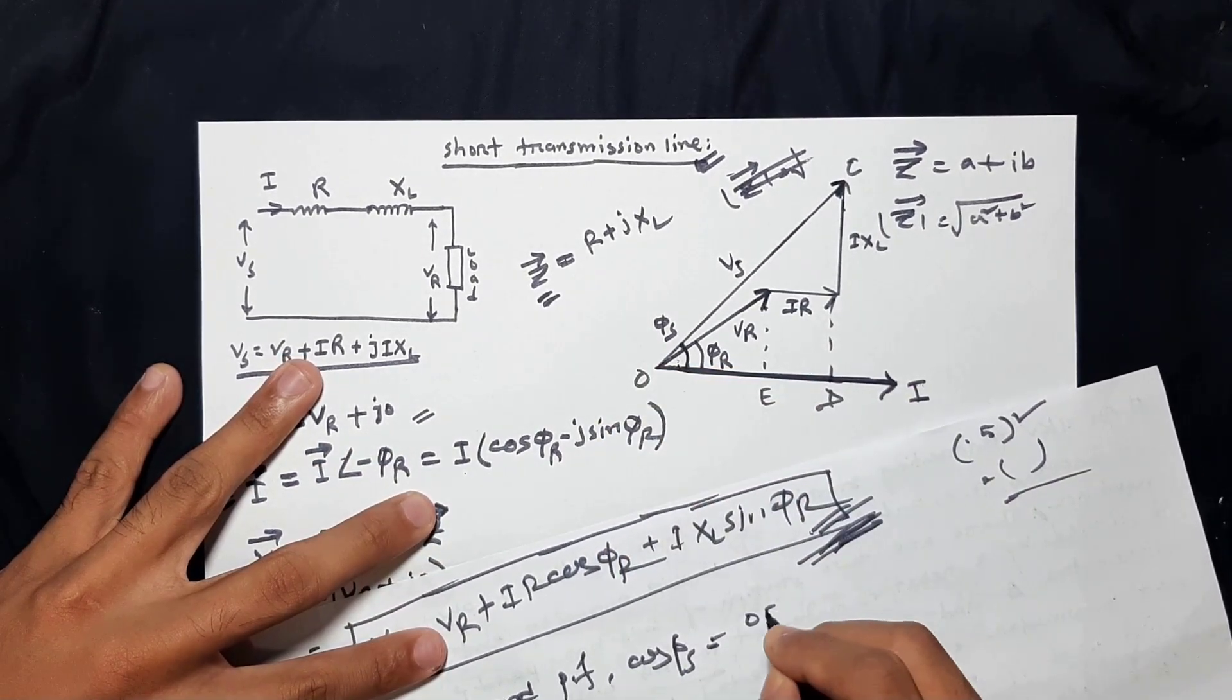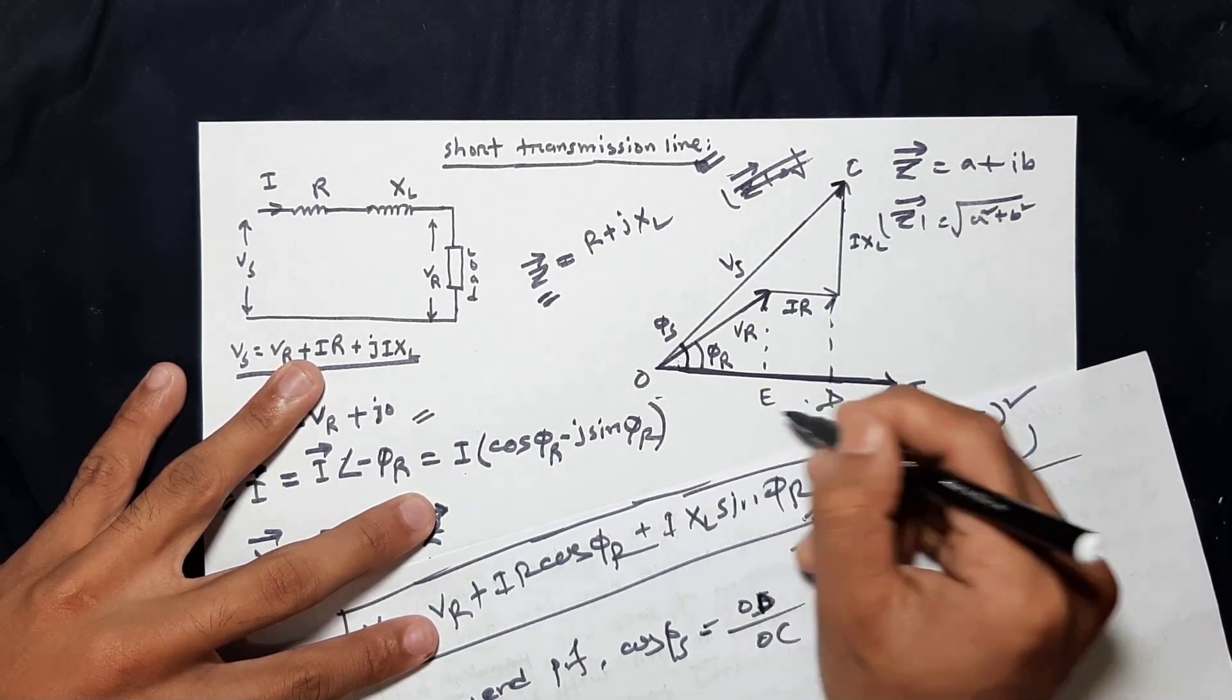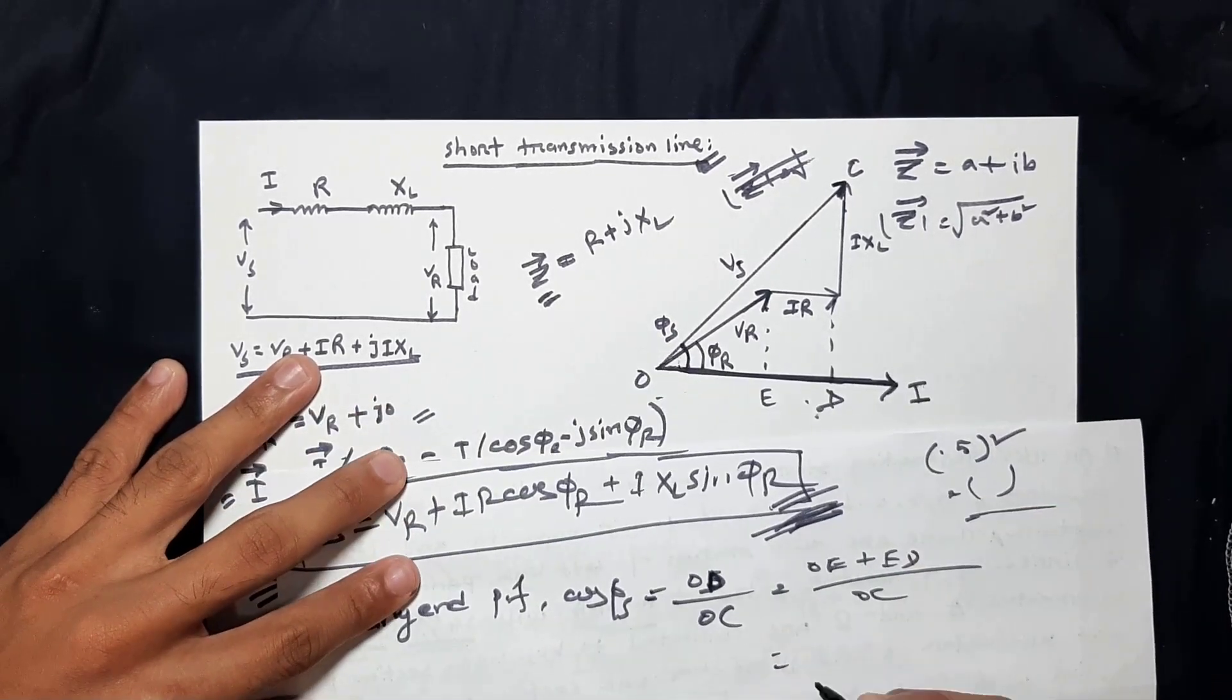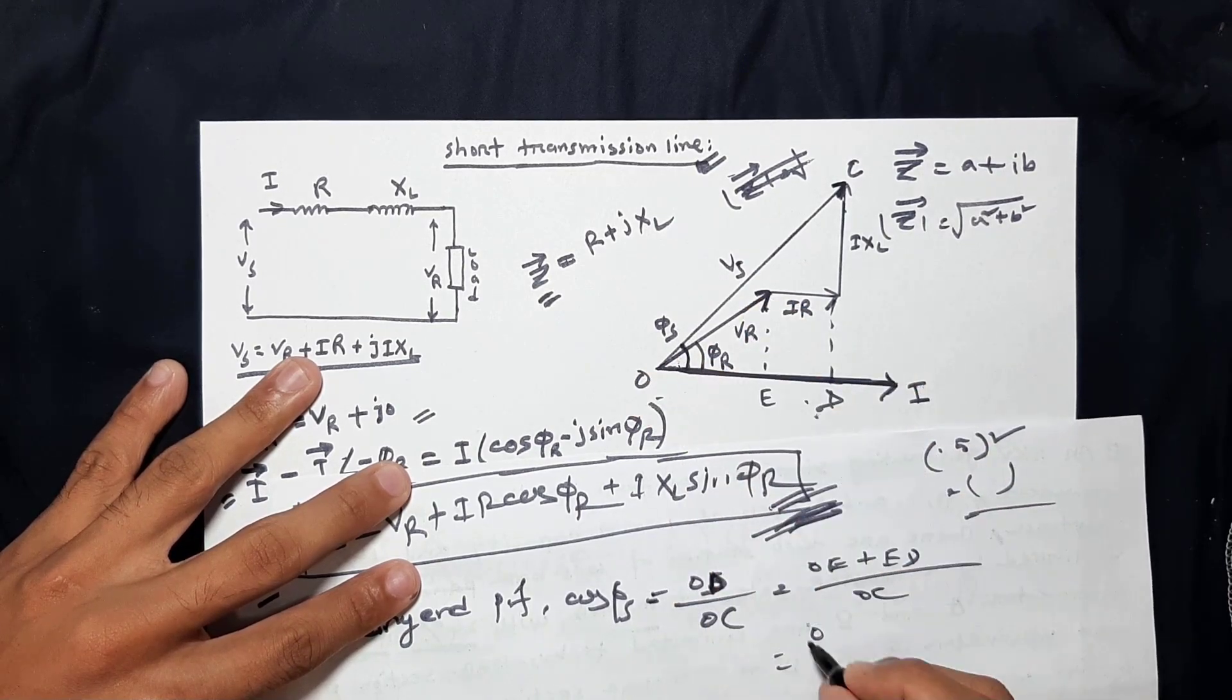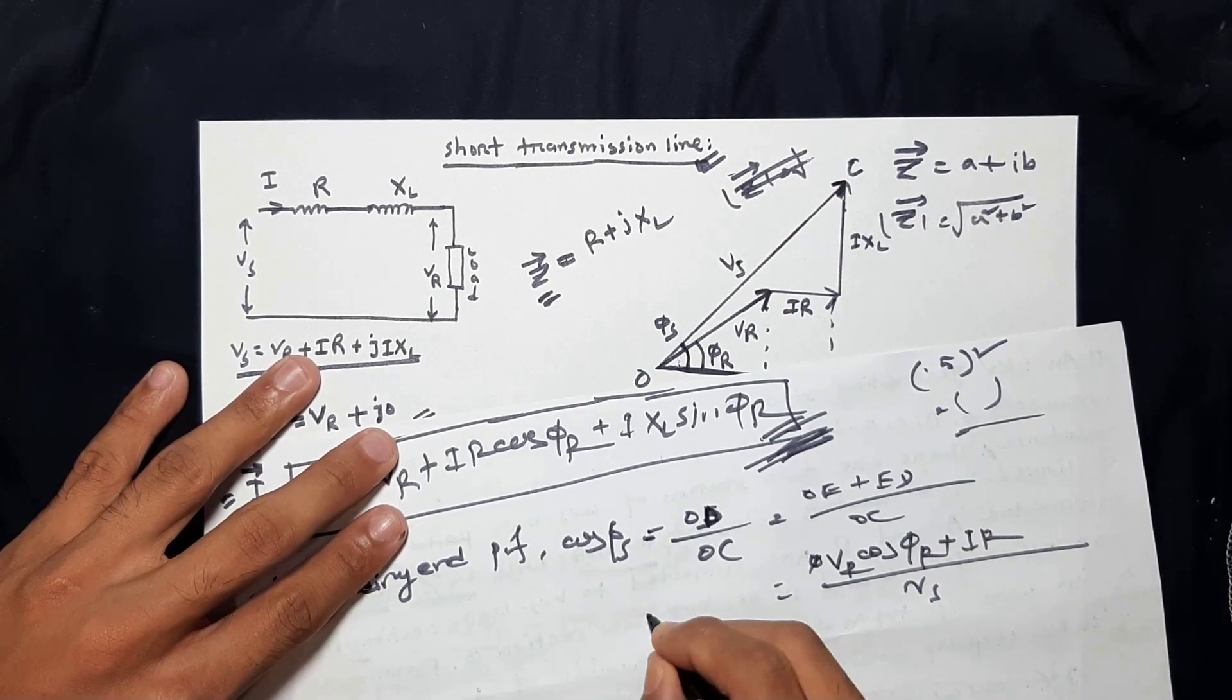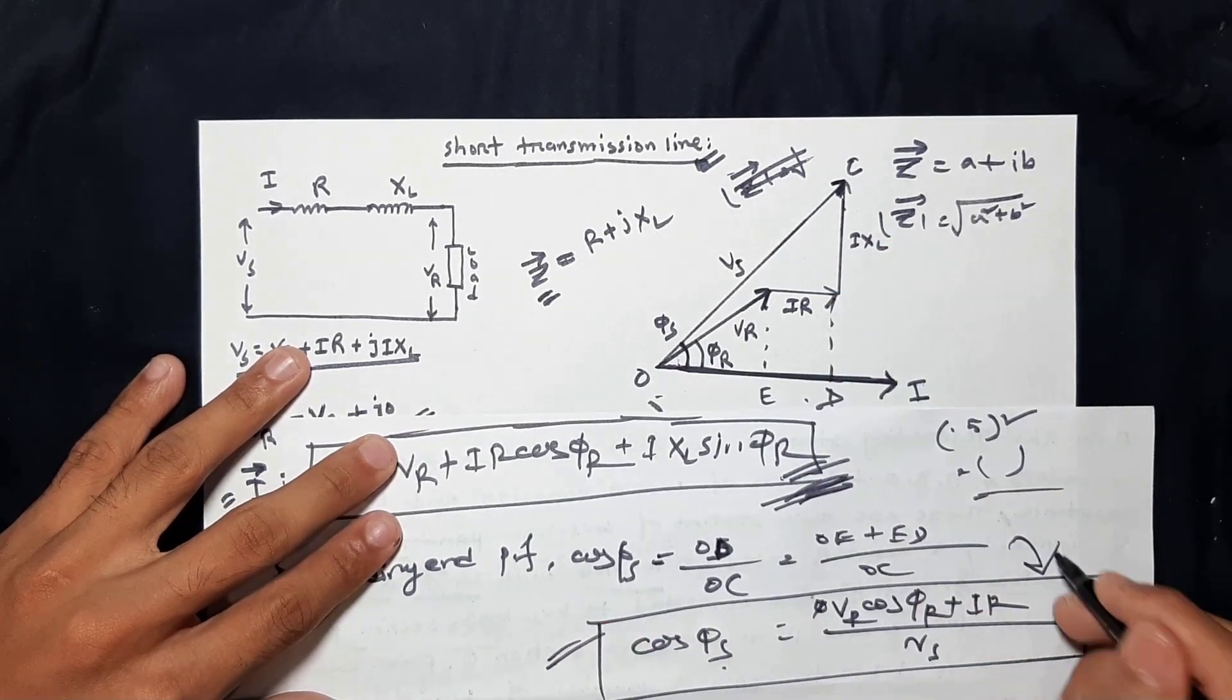The first term is OE by OC. OE plus ED. OE means simple Vr cos phi r plus ED. ED is simple IR divided by OC. OC means simple Vs. It is cos phi s. Sending end power factor. It is very good to know the equation. Now, if you have to solve mathematical problems, you will have to solve the problem.